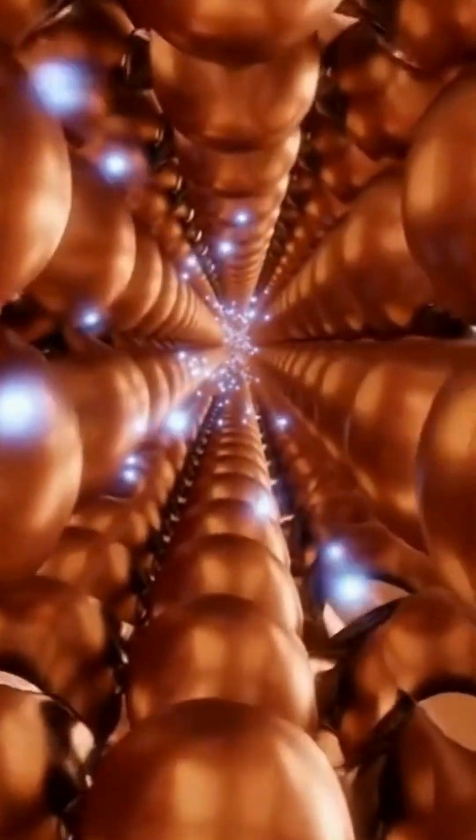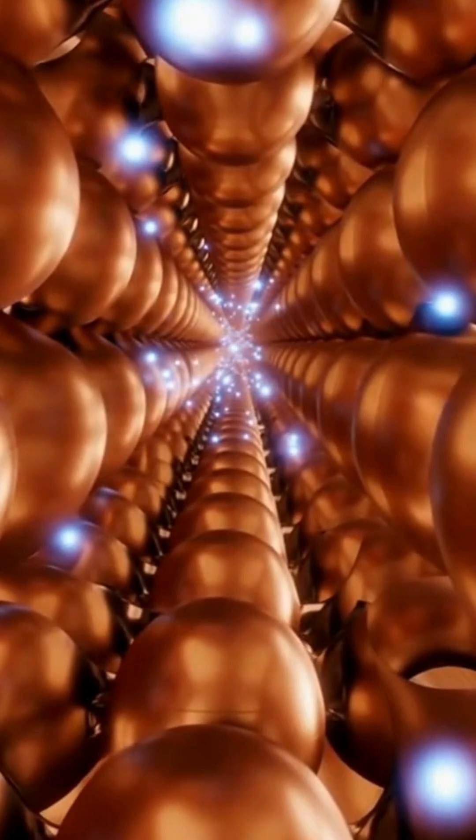Inside a copper wire, atoms lock into a compact lattice. The copper nuclei hold their places while a cloud of free electrons moves between them.